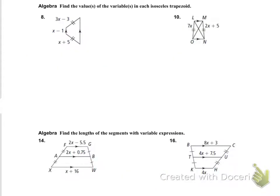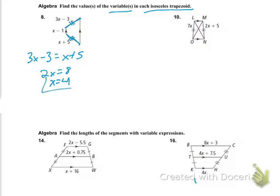Going on to number eight — more isosceles trapezoids. This side is equal to this side, so I can find x right away: 3x minus 3 is equal to x plus 5. That gives 2x equals 8, so x equals 4. For number ten, it's given to us right away. This is equal to this, so 7x equals 2x plus 5, giving 5x equals 5, so x equals 1.